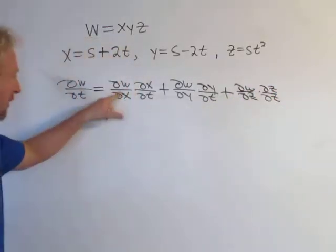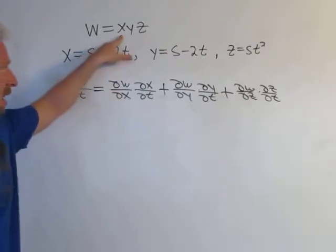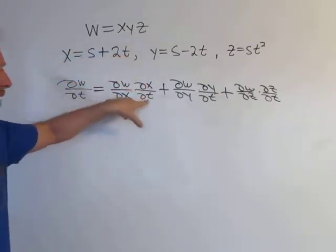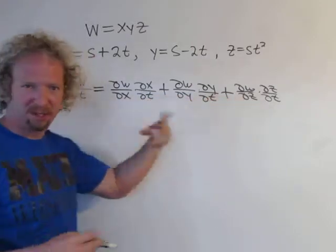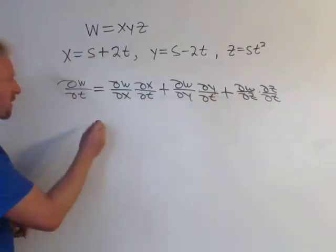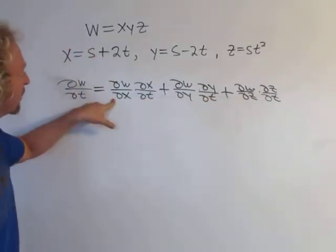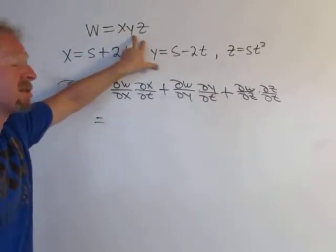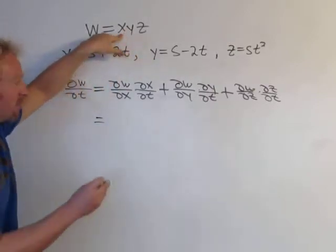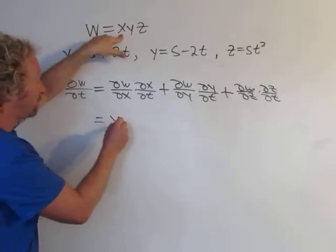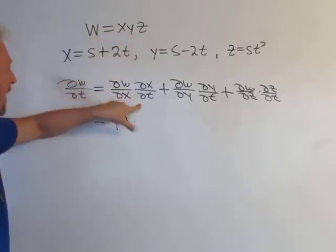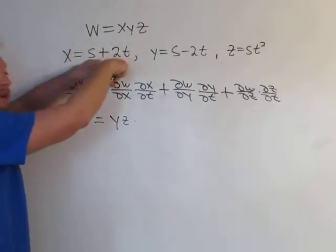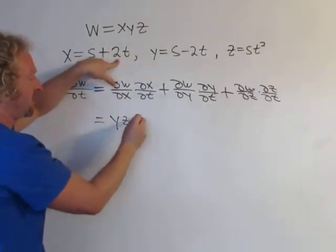Basically, you take the partial of each variable x, y, z and multiply by the derivative of the inside — we always end up with a partial with respect to t. So ∂w/∂x is the derivative with respect to x; y and z are constants, so the derivative of x is 1 and we get yz. Then ∂x/∂t: the derivative of s is 0, the derivative of 2t is 2, so ∂x/∂t = 2.